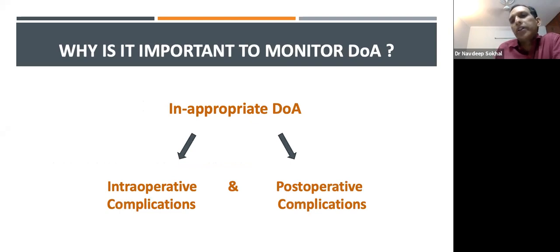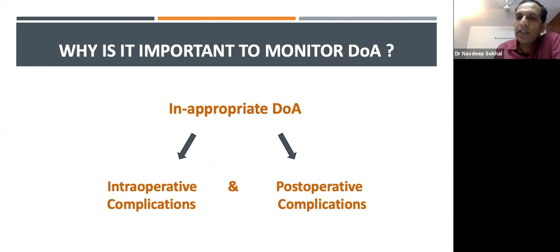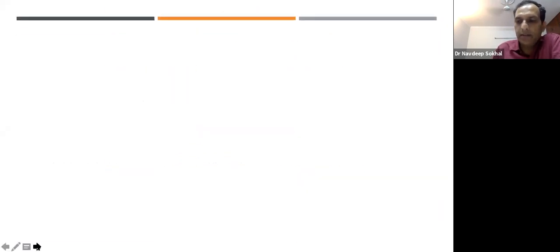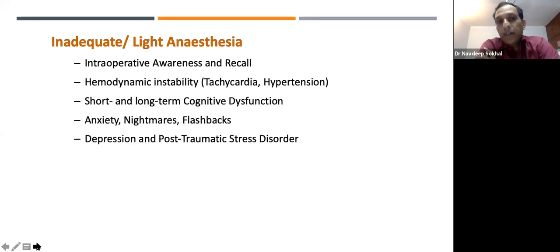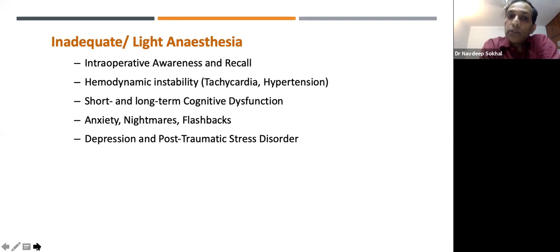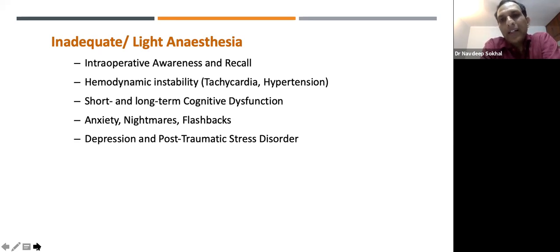Why do we need to monitor depth of anesthesia? Inappropriate anesthesia causes complications both intraoperatively and postoperatively. A light plane of anesthesia can cause intraoperative awareness and recall, hemodynamic instability — tachycardia, hypertension, sweating — as well as short and long-term cognitive dysfunction. Postoperatively, patients may have anxiety, nightmares, flashbacks, depression, and even post-traumatic stress disorder.